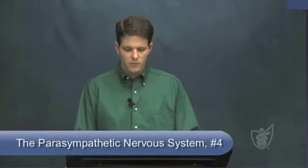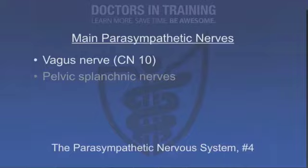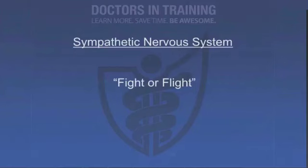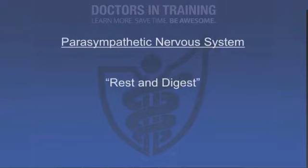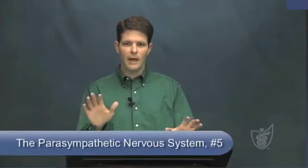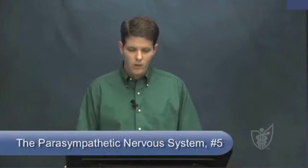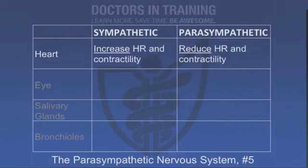Let's briefly review the autonomic nervous system, specifically the parasympathetic nervous system, because most of our cholinergic nerves cause parasympathetic effects. The main parasympathetic nerve in the body is the vagus nerve, cranial nerve 10. It innervates most of the organs between the clavicles and the pelvic crest. You also get some parasympathetic innervation from the pelvic splanchnic nerves. The sympathetic nervous system is your fight-or-flight system; the parasympathetic is your rest-and-digest system. In the heart, sympathetic causes increased heart rate and contractility, while parasympathetic reduces heart rate and suppresses myocardial contractility.